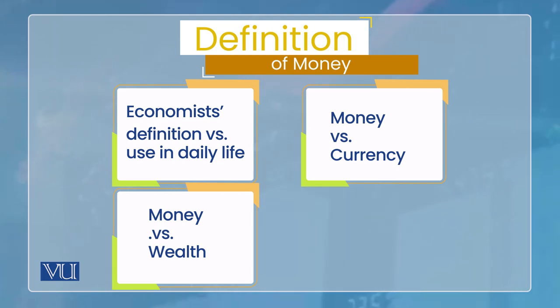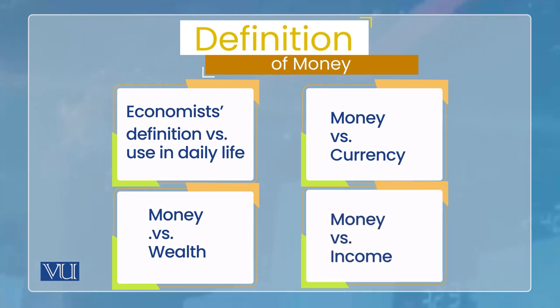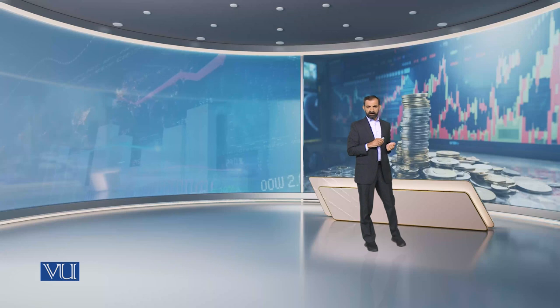Similarly, in daily life we sometimes treat money and wealth as the same thing — 'daulat' and 'paisa' are considered one and the same. This is a daily-life usage, but in economics we distinguish between wealth and money. Similarly, there is an important difference between money and income. In daily life people say 'uska paisa kam aata hai' (he earns little), but what they actually mean is his income — so income and money are two different things. We want to first clarify these differences so that we are clear about what money is.